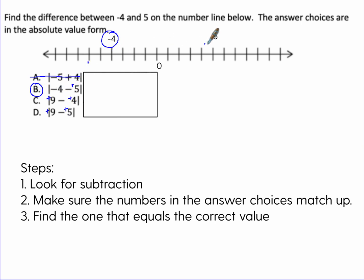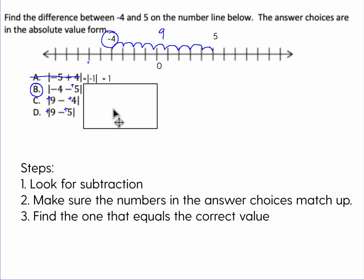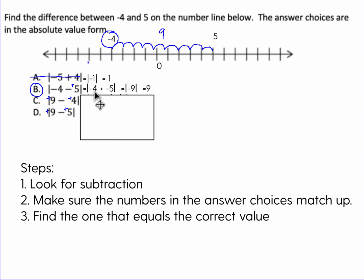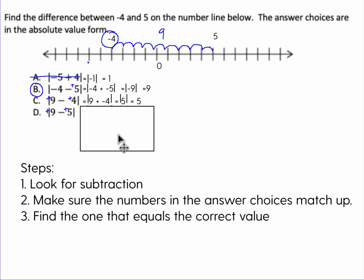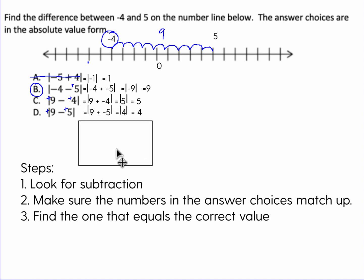Whether you count from five to negative four or from negative four to five, your answer is nine — it's nine units. So we need an answer that equals nine. The top choice gives absolute value of negative five plus four, which is one — not correct. The correct choice treats subtraction as adding the opposite: negative four plus negative five gives the absolute value of negative nine, which is nine. Choice C gives absolute value of five, and D gives absolute value of four — neither is correct.